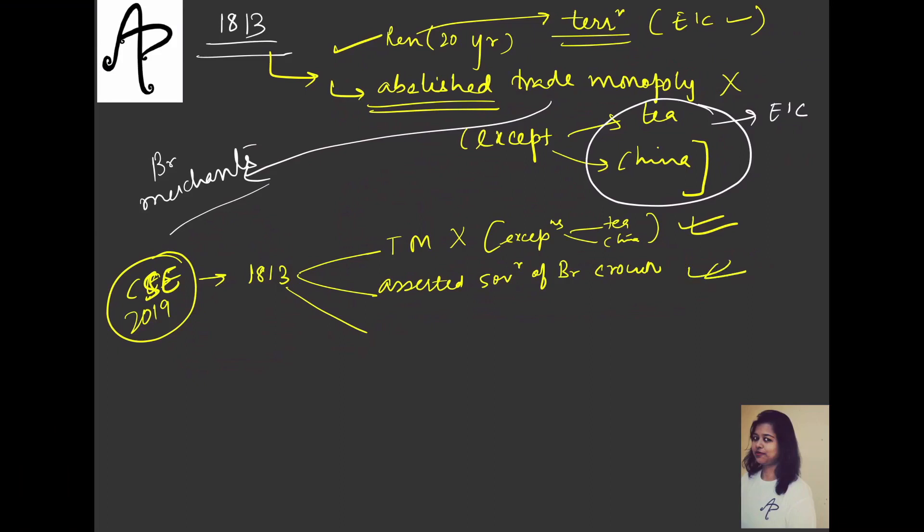The third statement they gave was about that the revenue of India was controlled by British Parliament. So what will this statement become? Those of you who have studied will know that this will be wrong. And here what was the answer? This thing had happened in Pitt's India Act itself. If you remember, they had established Board of Control, gave them all the power over India, and told the Court of Directors that you will only look at commercial things. But overall, the idea was that British Parliament did not talk about revenue here. So out of these two options, both had to be correct.